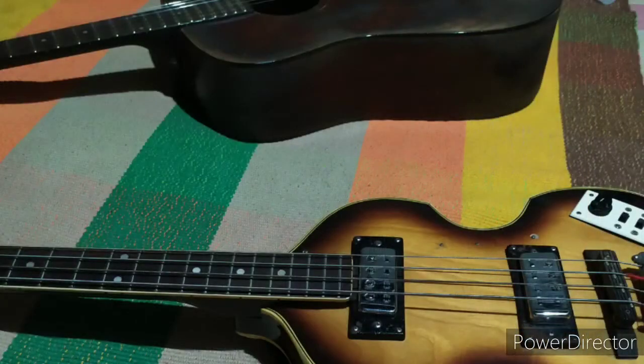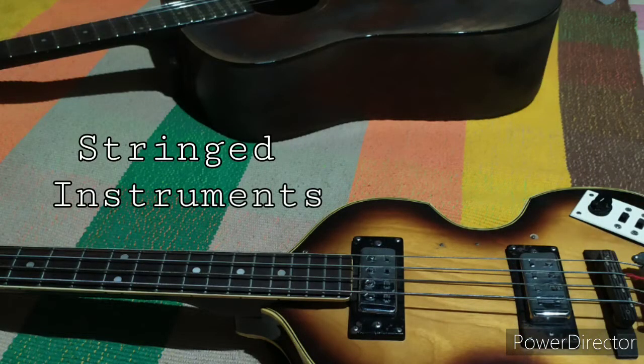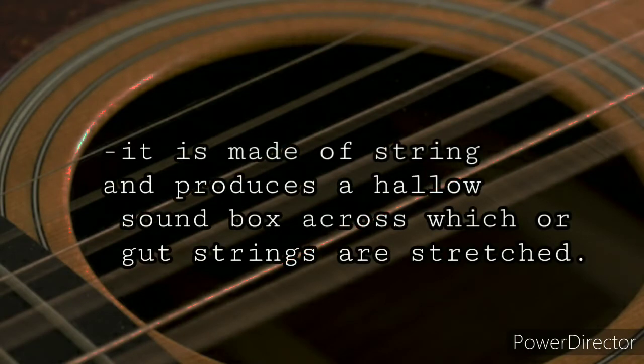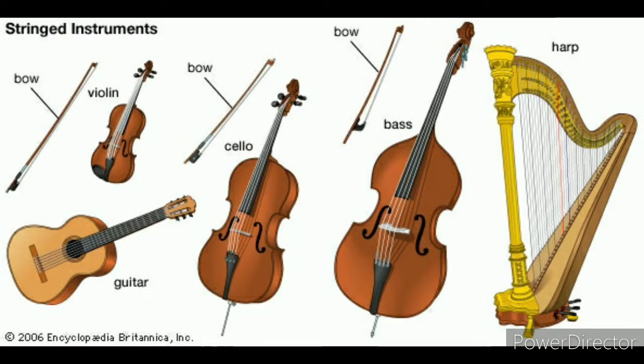Let's begin with string instruments. A string instrument is made of string and produces a hollow sound box across which gut strings are stretched. String instruments are composed of guitar, violin, cello, bass, and the oldest string instrument, harp. Note that these string instruments are quite similar in their parts.